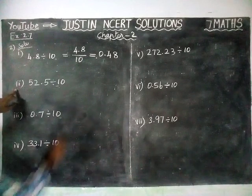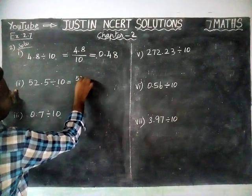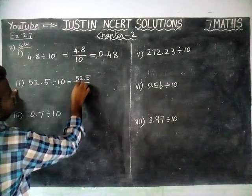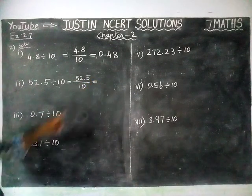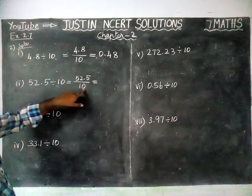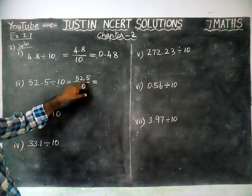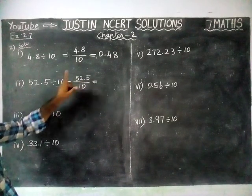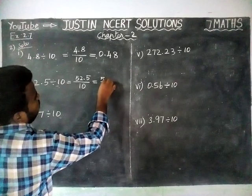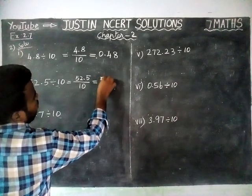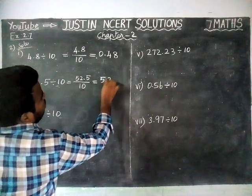Next, the second question: 52.5 divided by 10. The same rule applies — when we are dividing by 10, we have to move left hand side one step, because there is one zero. So moving left hand side one step, the answer is 5.25.